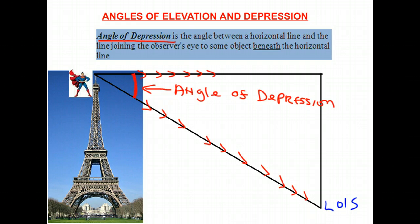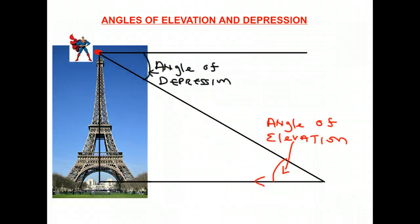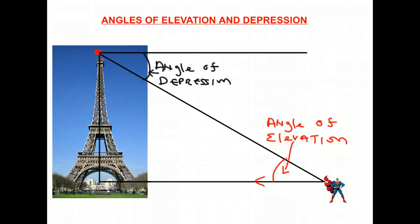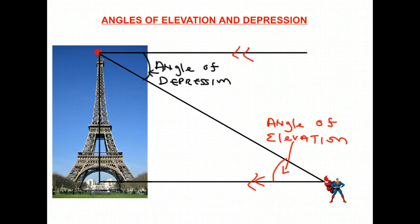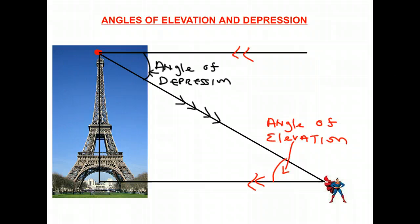In this picture we have both the angles of elevation and depression. There's something important to notice: when Superman is looking down we have an angle of depression, and when he's at the bottom looking up that's an angle of elevation. These two horizontal lines — the one at the top and the one at the bottom — are considered to be parallel, and the line connecting them is called the transversal between two parallel lines.